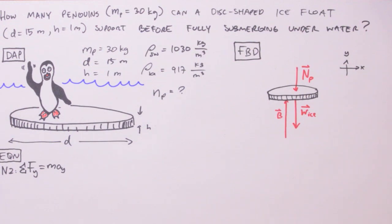Now is our object in question accelerating? The answer is no. Why? Well, because we said so. That is to say we are setting just the right amount of penguin on the ice float to perfectly submerge it, not sink it. So we can set this acceleration to zero.